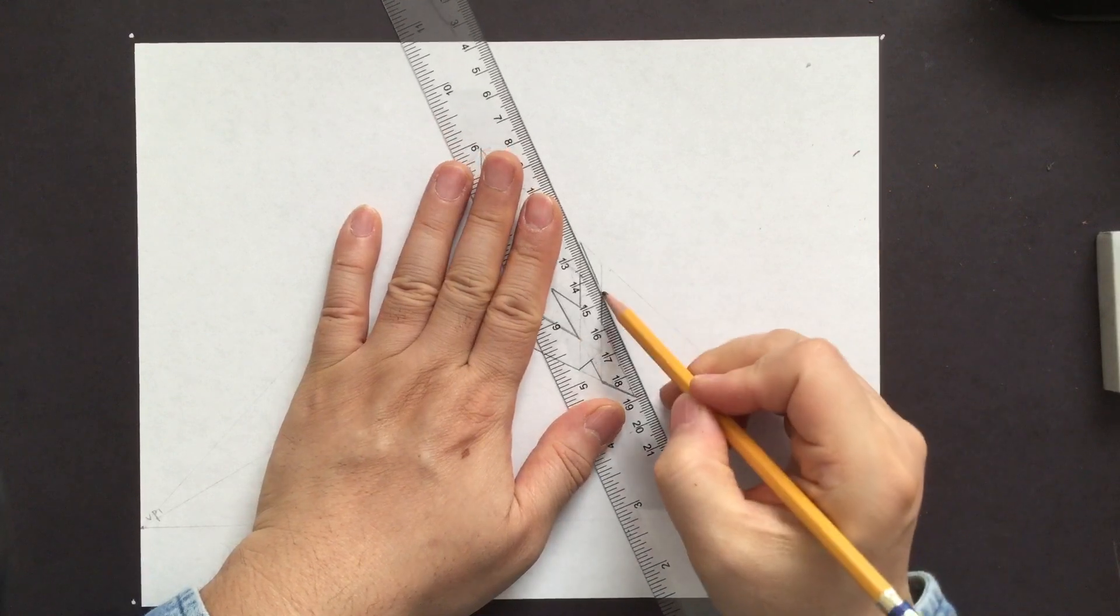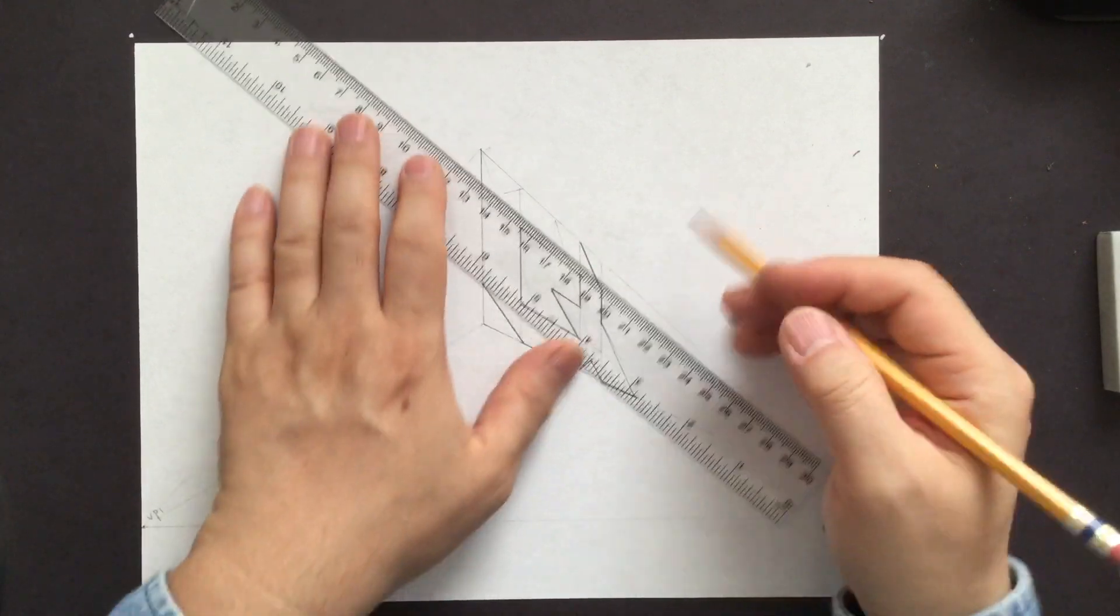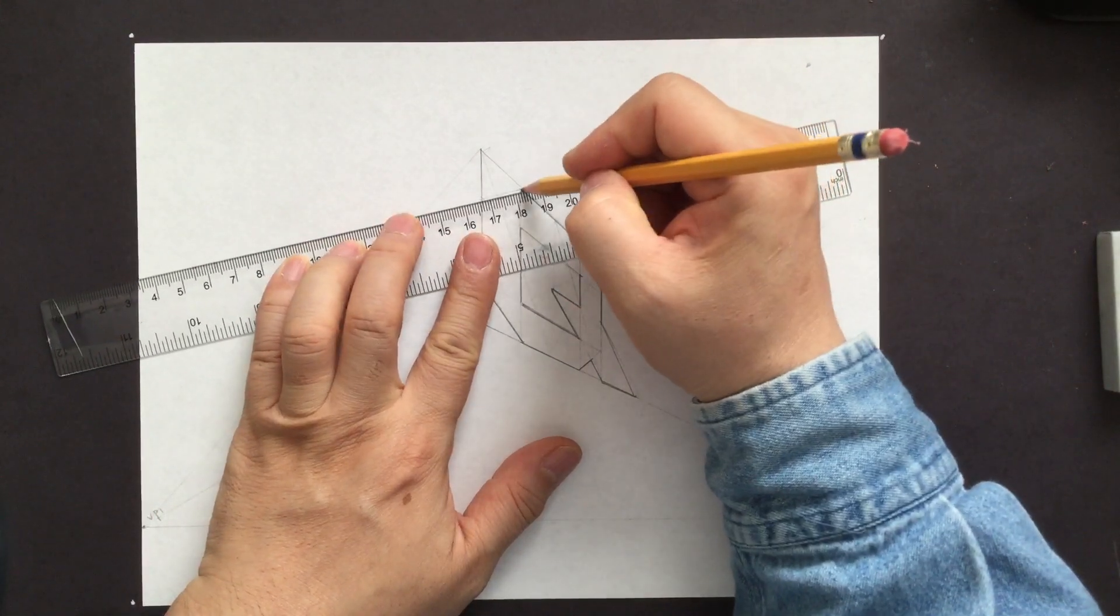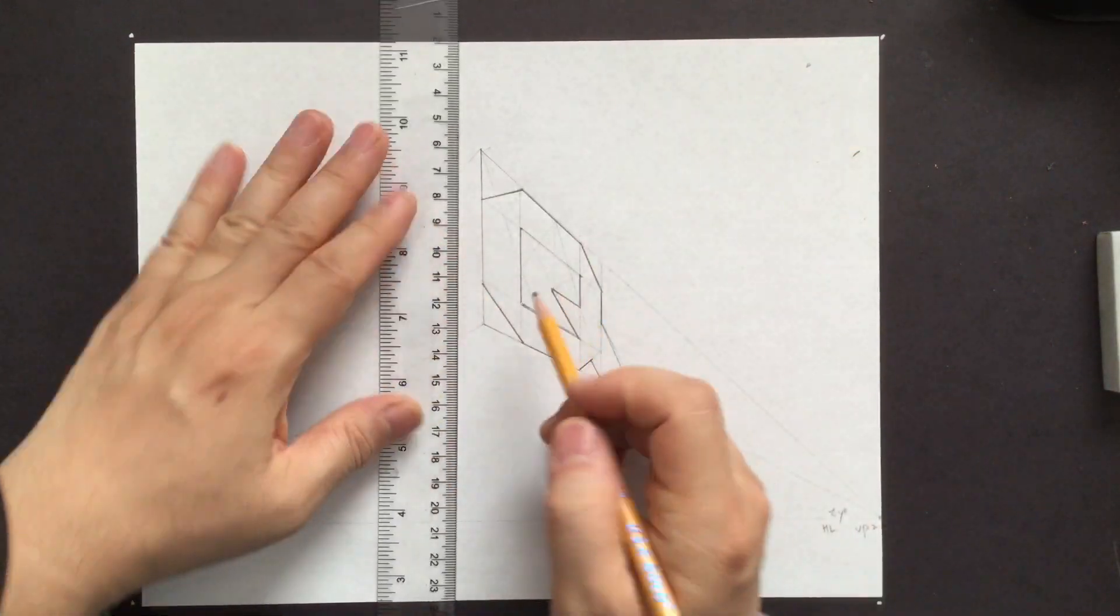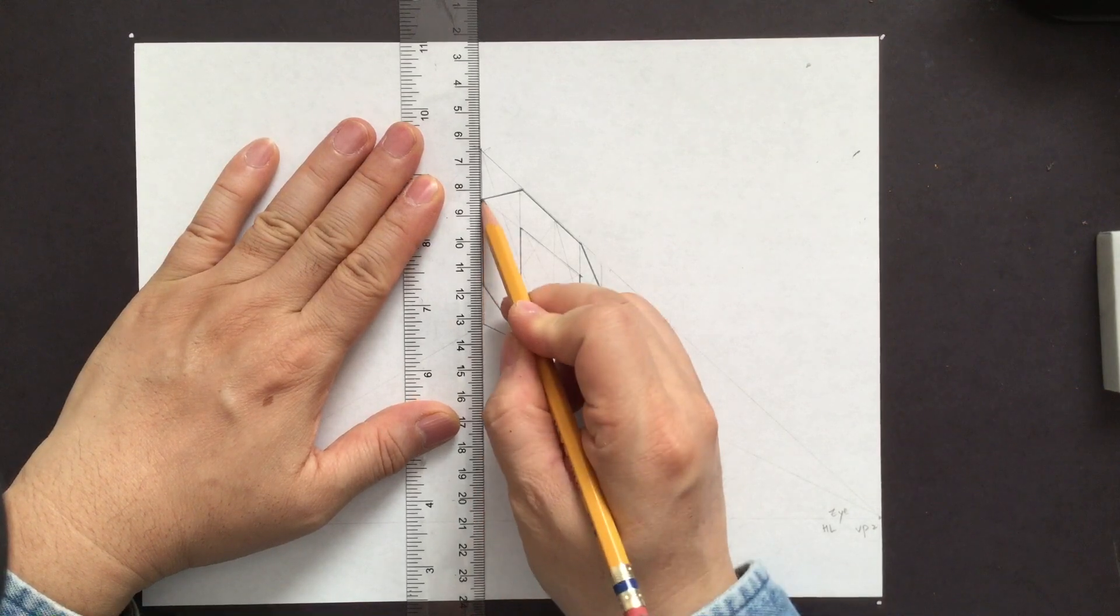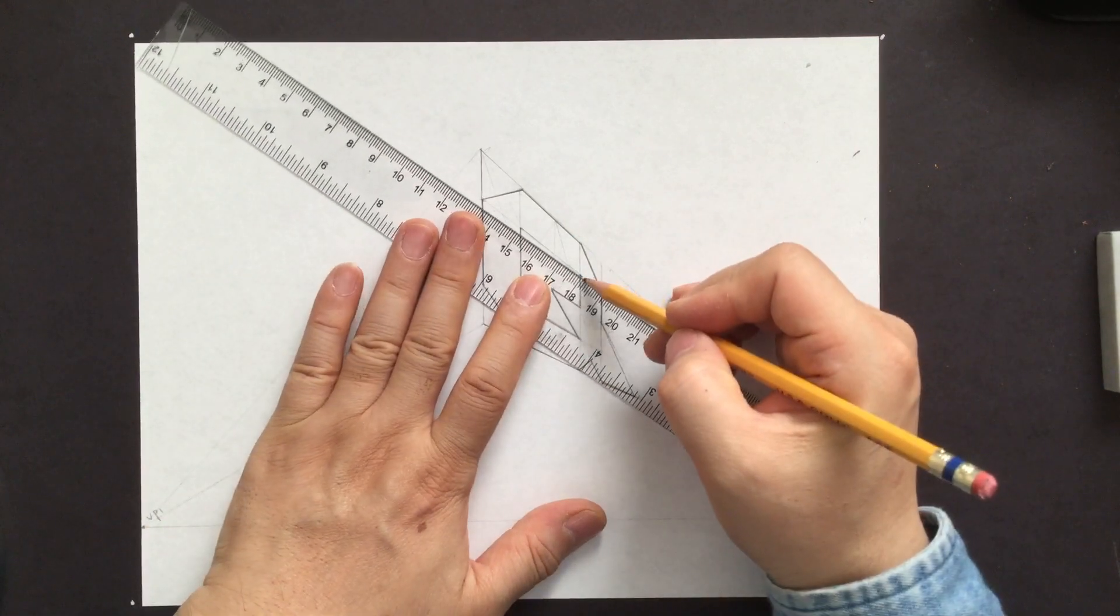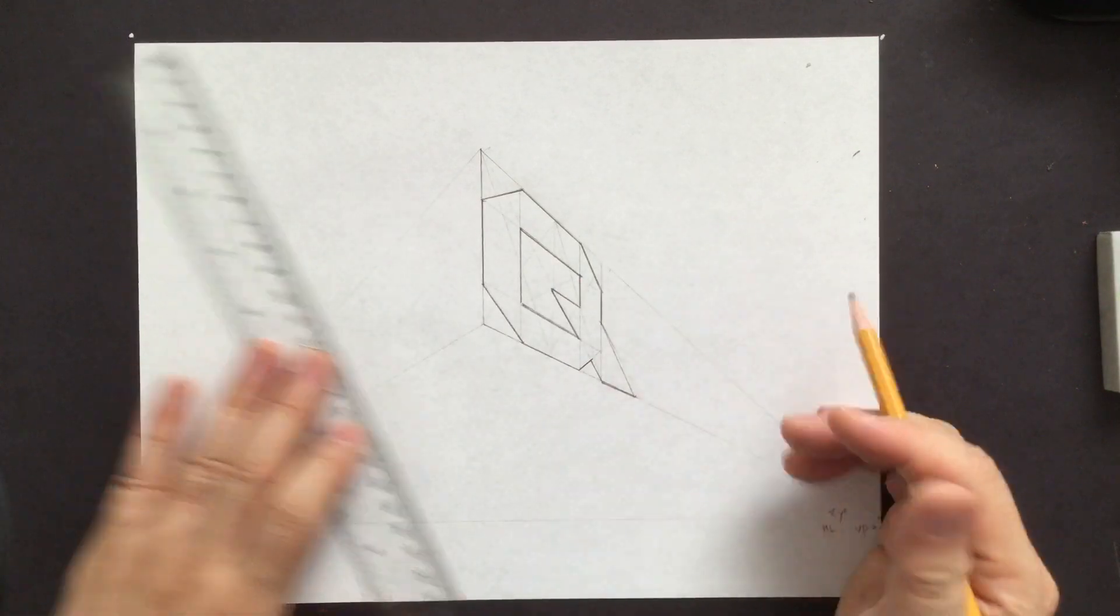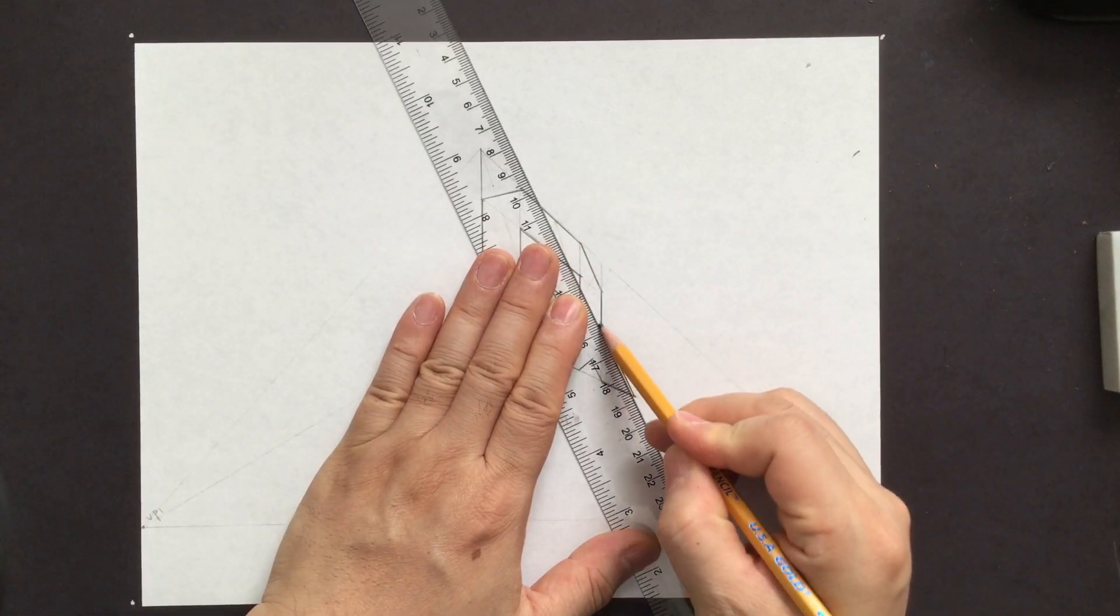Again, that's why I made a line lighter. When you make a mistake, try to erase. But it doesn't erase that well. Alright. There's our cube.